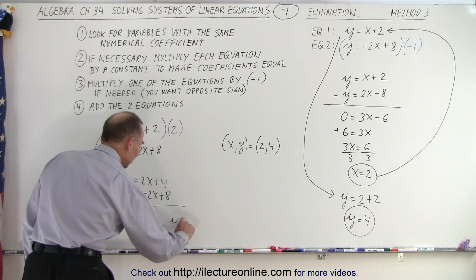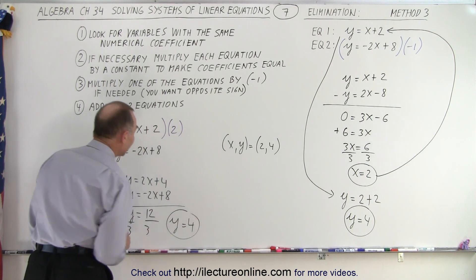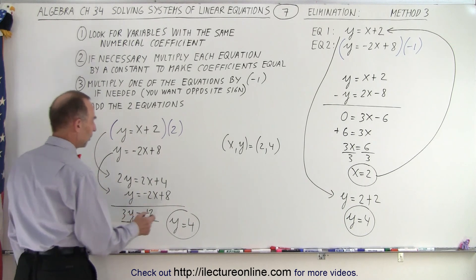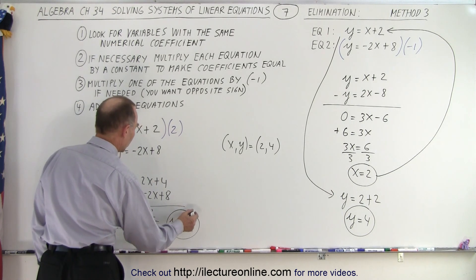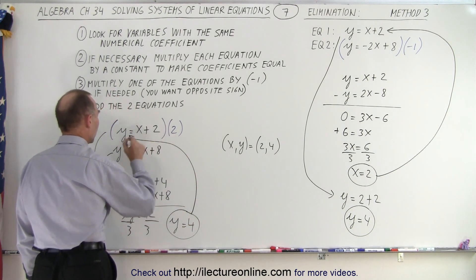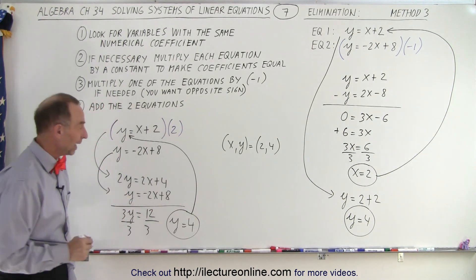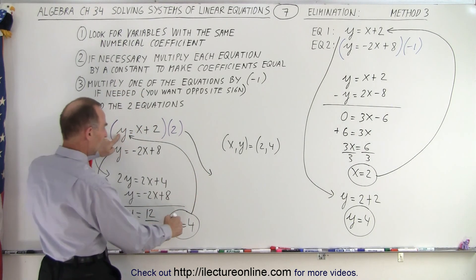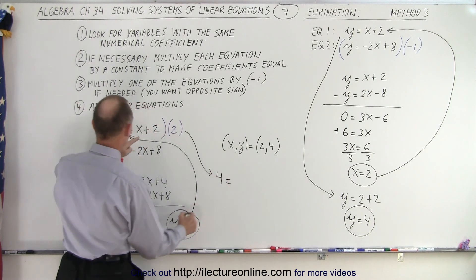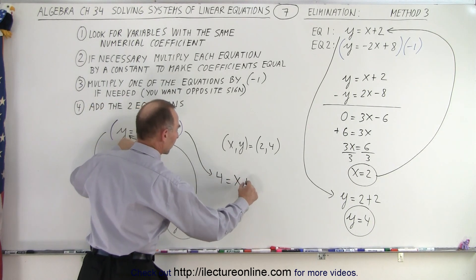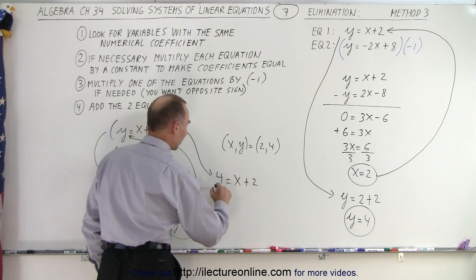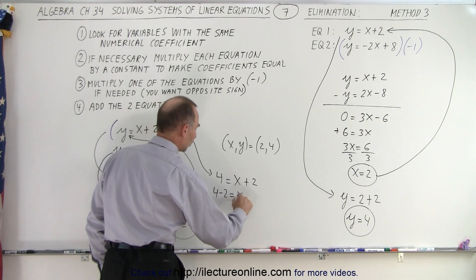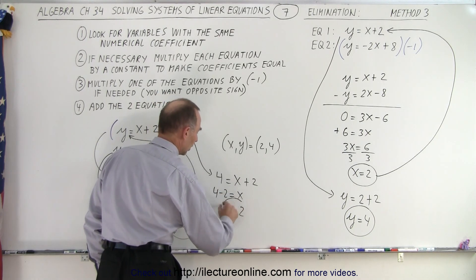And then what I do with that is I plug that into one of my equations to solve for x. So let's do that. So this equation then becomes, instead of y, I get 4 is equal to x plus 2. Then move the two over to the other side. 4 minus 2 is equal to x or x equals 2. And notice, here I eliminated the y variable.